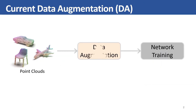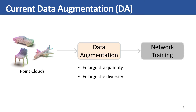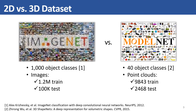Data augmentation is a very common strategy to avoid overfitting by artificially enlarging the quantity and diversity of the training samples. In the 2D domain, image benchmarks often contain millions of training samples. However, 3D datasets are much smaller, so data augmentation is much more critical in the 3D domain.